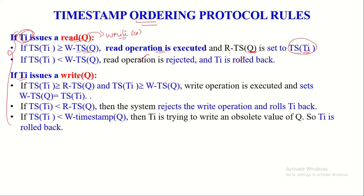If transaction TA issues a write request on Q, since write is conflicted with read as well as write, the transaction timestamp must be compared with both read timestamp and write timestamp of Q. That is, if timestamp of TA is greater than or equal to read timestamp as well as write timestamp of Q, then that write operation will be executed and immediately write timestamp of Q is set to timestamp of TA, meaning transaction TA did the write operation on Q successfully. If the timestamp of TA is less than read timestamp of Q or write timestamp of Q, in both cases the write operation is rejected and the transaction is rolled back.